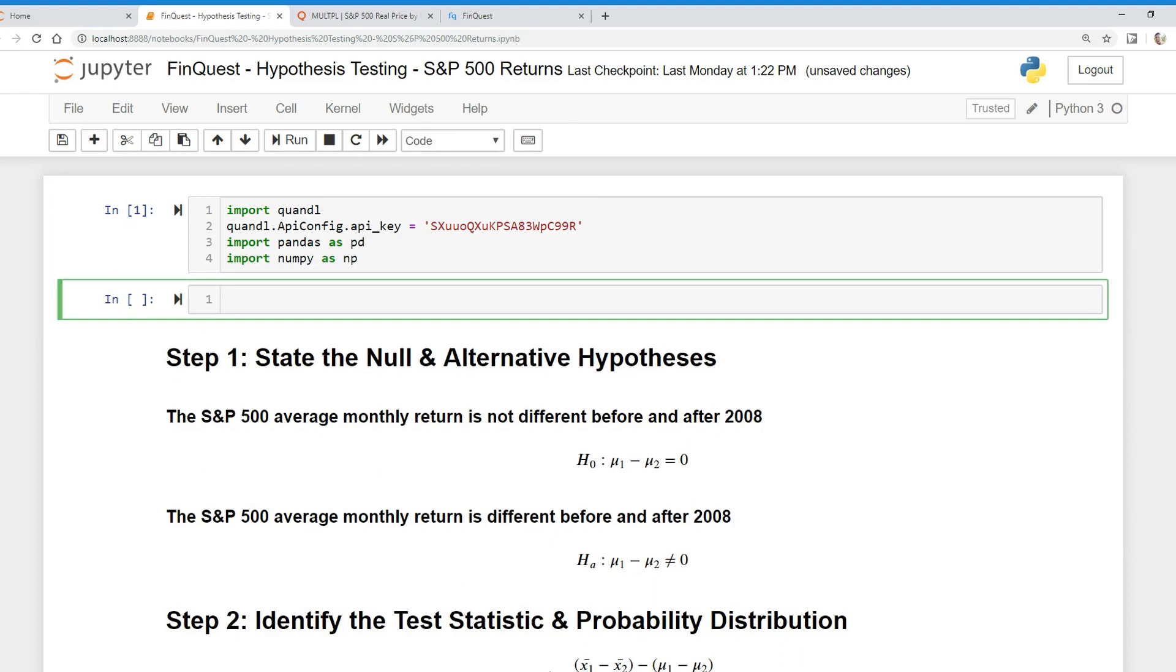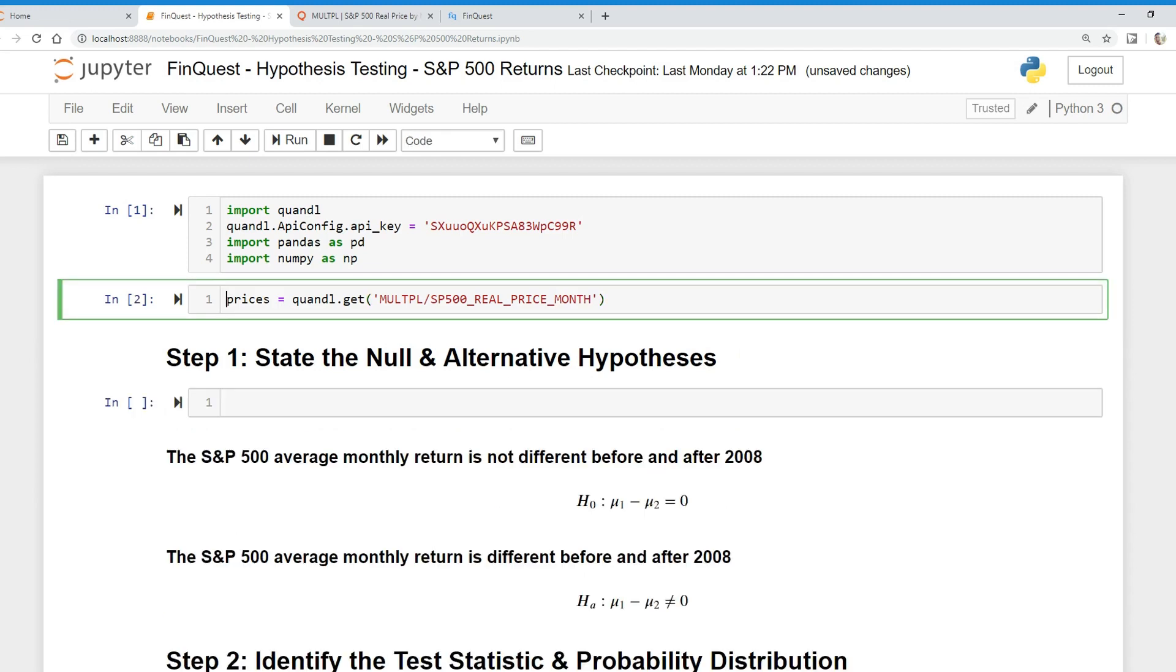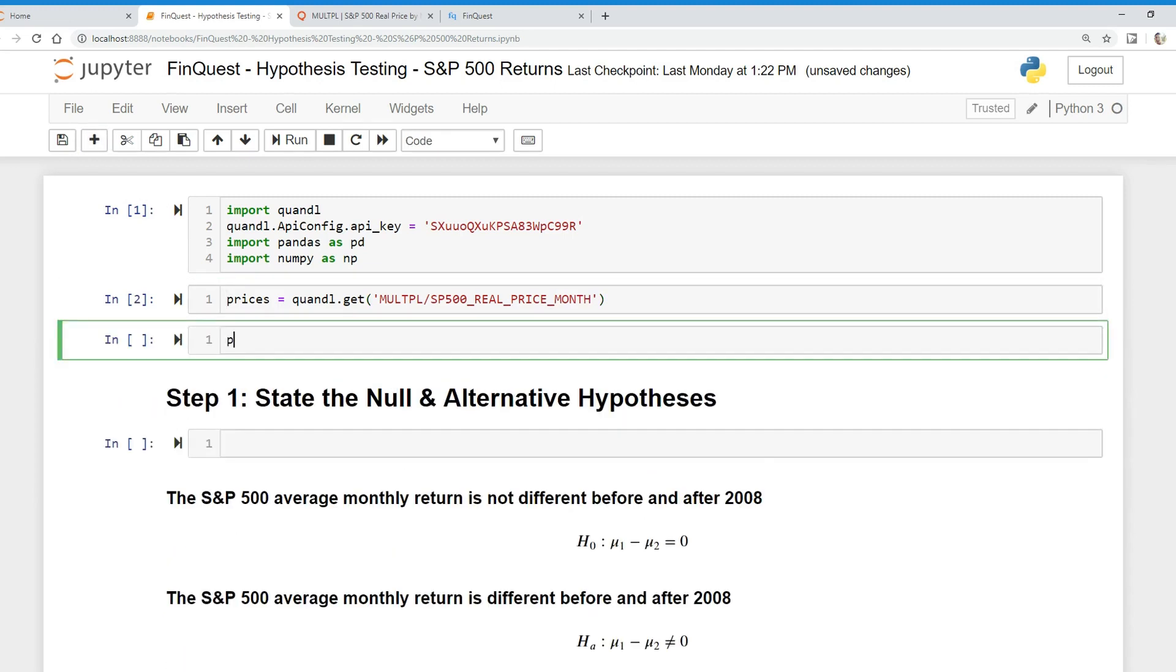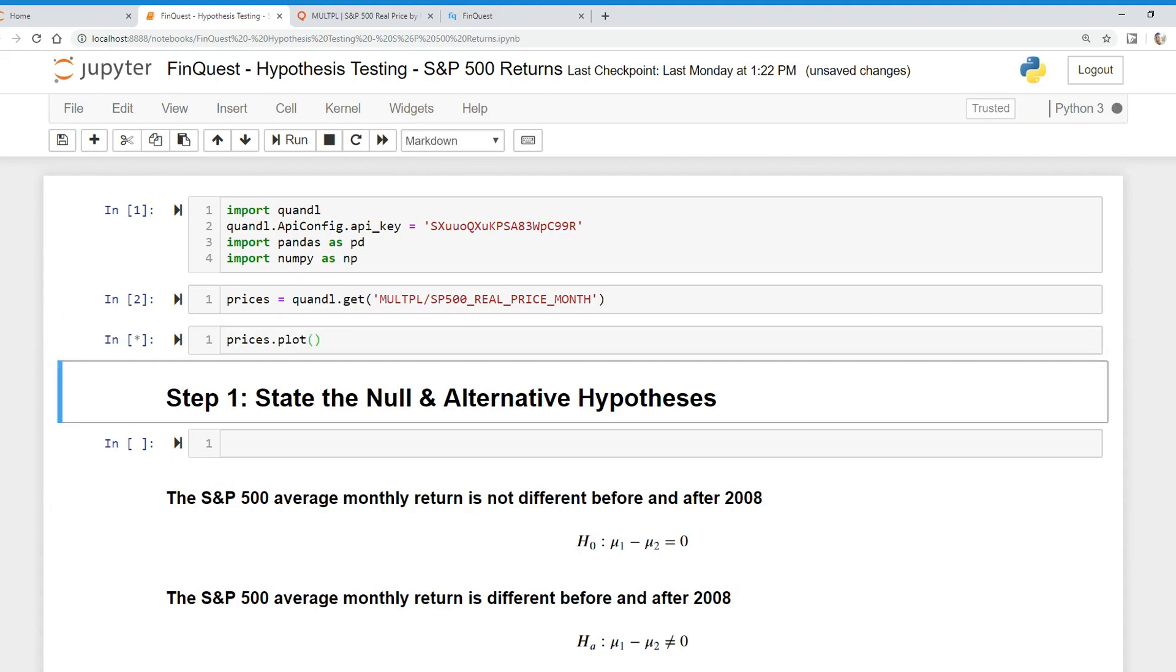Quandl outputs a pandas dataframe and we're going to call that dataframe prices. We're going to say quandl.get. It has two functions: dot get and get_table. Get_table works with tabular data; we're working with time series data so we use the dot get function. The name of our dataset is MULTPL/SP500_REAL_PRICE_MONTH.